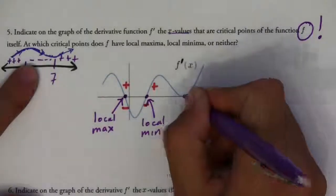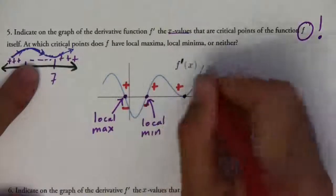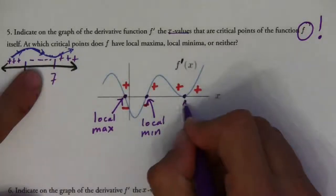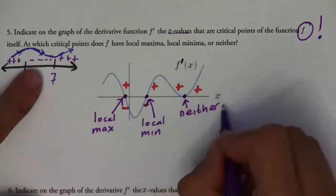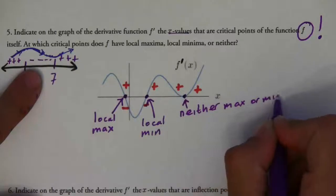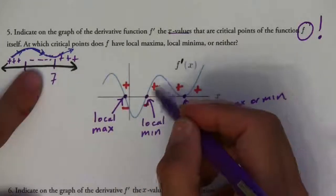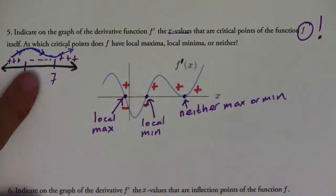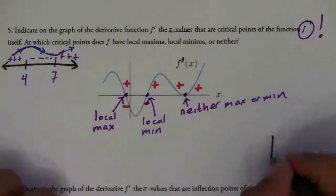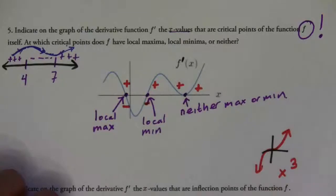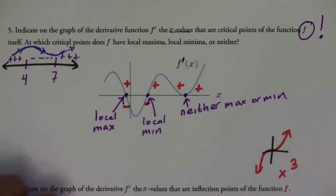Now what about this one? The derivative goes from being positive to positive. This means that the original function goes from increasing to increasing, so this is neither a max nor a min — because it would have to go from increasing to decreasing, or decreasing to increasing, to be a maximum or minimum. It has to change sign on the derivative. This is like if your function is increasing, has a flat spot, and then is increasing again — for example, the function x cubed has this characteristic.